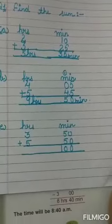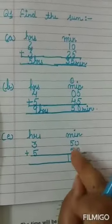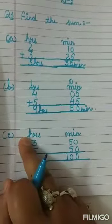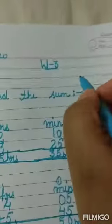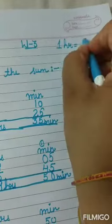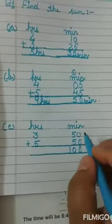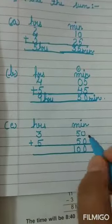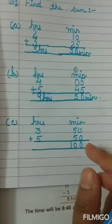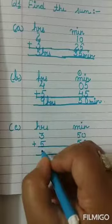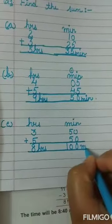अब जैसे हमने length, weight, capacity किया, उसमें क्या relation होता था? 1 kilometer is equal to 1,000 meters, तो अगर यहां 1,000 से ज़्यादा होता था तो carry over जाता था। बट यहां hours और minutes में 1,000 या 100 का relation नहीं है। यहां hours और minutes का relation है: 1 hour is equal to 60 minutes. 1 hour में 60 minutes होते हैं, तो minutes अलग से add होंगे और hours अलग से add होंगे। So: 0 plus 0 is 0, 5 plus 5 is 10. यह बन गए 100 minutes, और hours में 5 plus 3 is 8. अभी यह question यहीं पे finish नहीं होगा।